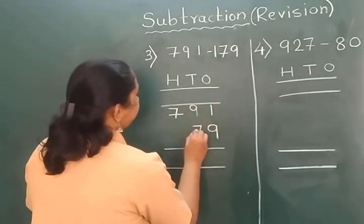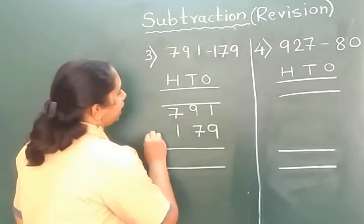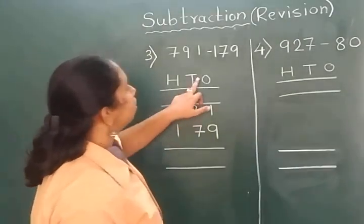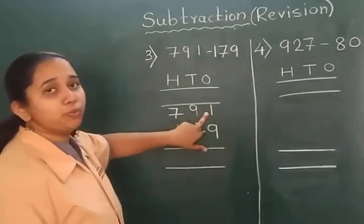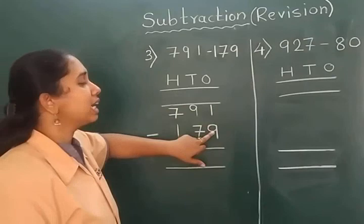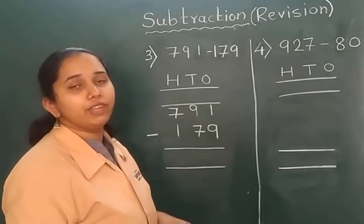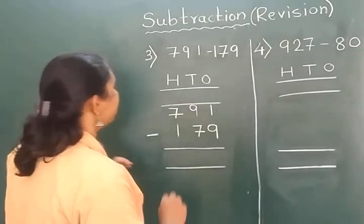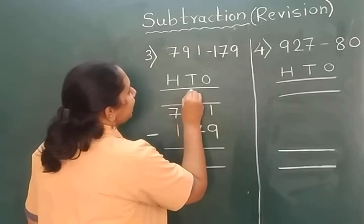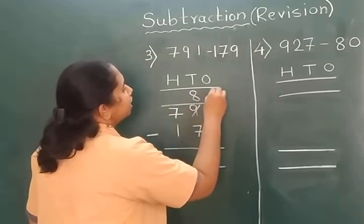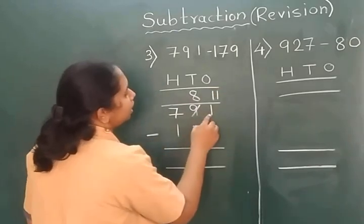In the same way I will write the second number. Now we will subtract the numbers. Now we will focus on one's place. Here 1 is present and we have to subtract 9. Can we subtract 9 from 1? No. So what we have to do? We have to borrow number from this 9. So it will become 8, and here it will be 1, and this 1 will become 11.